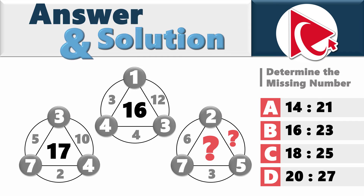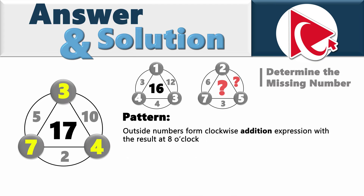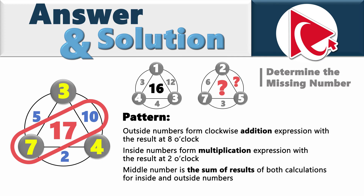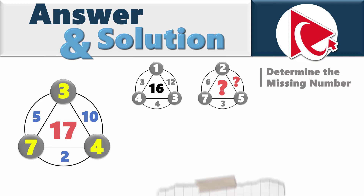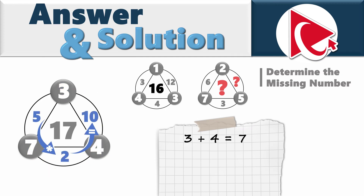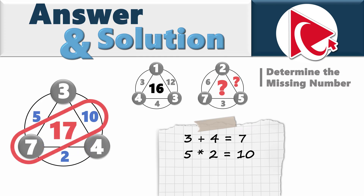If you look closely, you can easily recognize the pattern. Outside numbers form a clockwise addition expression with the result at 8 o'clock, and inside numbers form a multiplication expression with the result at 2 o'clock. The middle number is the sum of results of both calculations. For example, in the small circles: 3 plus 4 equals 7. In the larger circle: 5 multiplied by 2 equals 10 — moving counterclockwise. Then 7 and 10 are the results, and 10 plus 7 equals 17, which is the middle number.